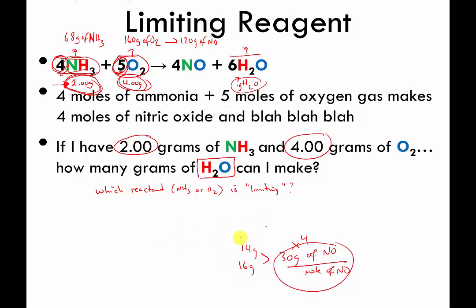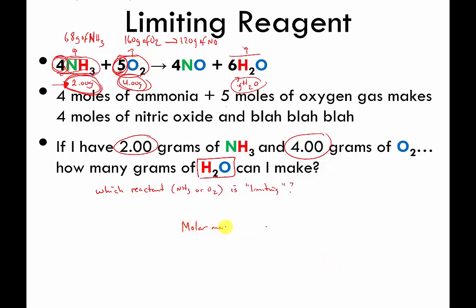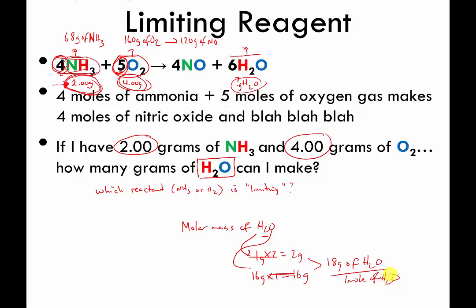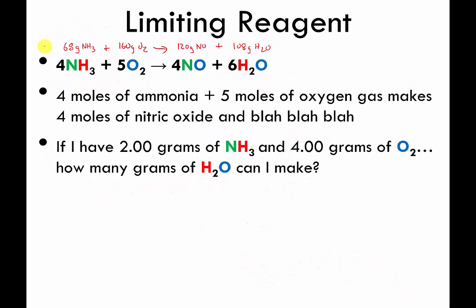Last, molar mass of water — you'll probably memorize this eventually. Molar mass of H2O: hydrogen is 1 g and we have two, so 2 g; oxygen is 16 g; total 18 g per mole of water. We have six moles of water in the equation, so 18 times 6 is 108 grams. We've now rewritten the balanced equation using weights: 68 g of NH3 needs to mix with 160 g of O2 to make 120 g of NO and 108 g of water.